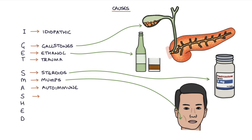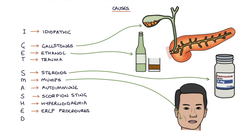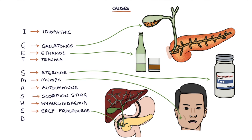S refers to scorpion sting — and this is one that everybody remembers but is never relevant. H refers to hyperlipidemia, E refers to ERCP procedures, and D refers to drugs, particularly furosemide, thiazide diuretics, and azathioprine.